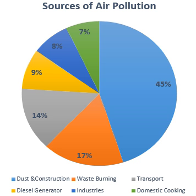India's Central Pollution Control Board now routinely monitors four air pollutants: sulfur dioxide, oxides of nitrogen, suspended particulate matter, and respirable particulate matter. These are target air pollutants for regular monitoring at 308 operating stations in 115 cities and towns across 25 states and four Union territories of India. Monitoring of meteorological parameters such as wind speed and direction, relative humidity, and temperature has also been integrated with air quality monitoring, carried out with a frequency of twice a week to yield 104 observations in a year.